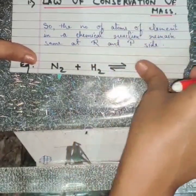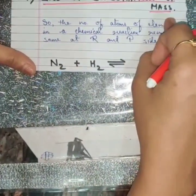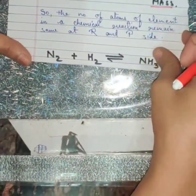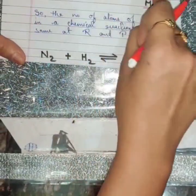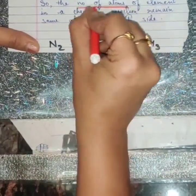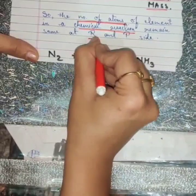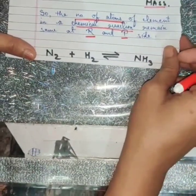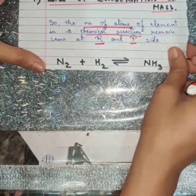Children, I request you all to keep writing the definitions as I dictate. The law of conservation of mass states that the mass of the reactants is equal to the mass of the products during the course of a chemical reaction. In order to comply with this law, a chemical equation needs to be balanced. The total number of atoms of each element in a chemical reaction must remain the same on the reactant and product sides. If it is not the same, we need to balance it — an unbalanced equation has no meaning.